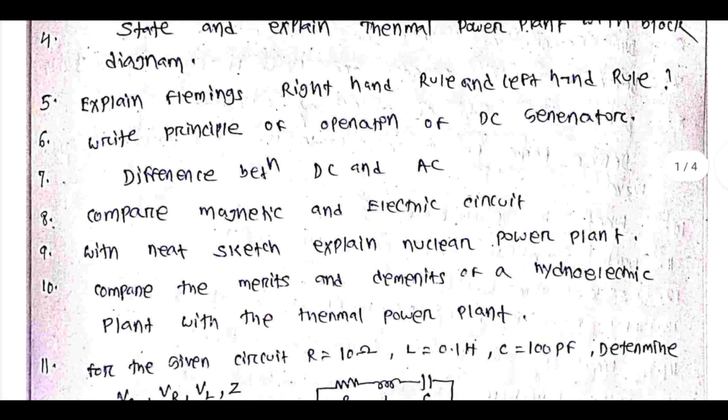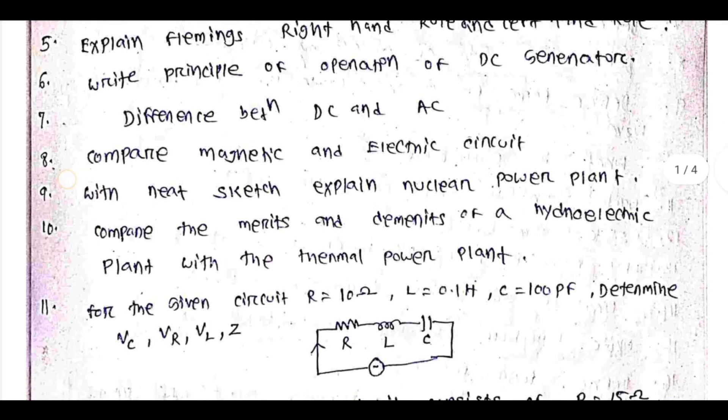More important long-answer questions: Explain Fleming's right-hand rule and left-hand rule. Write the principle of operation of a DC generator. Explain the difference between DC and AC — direct current and alternating current.